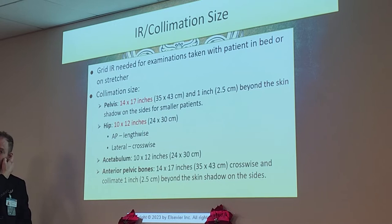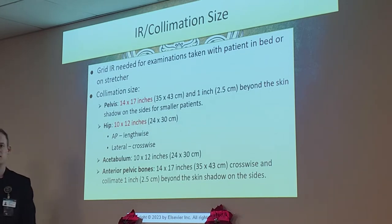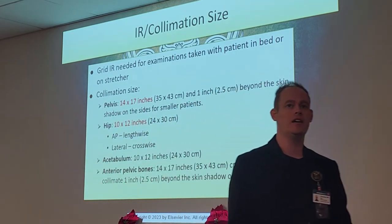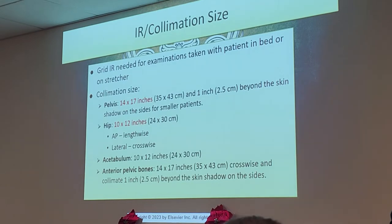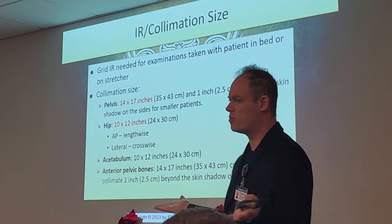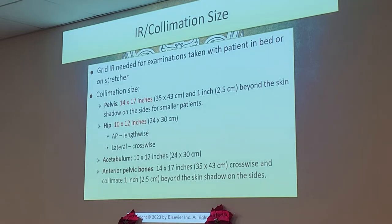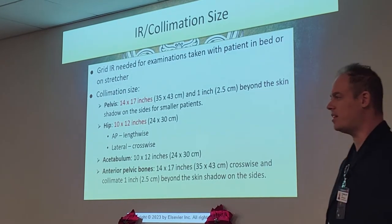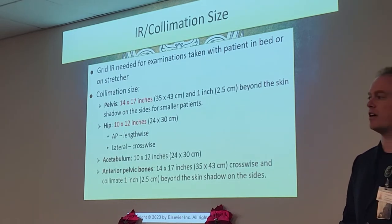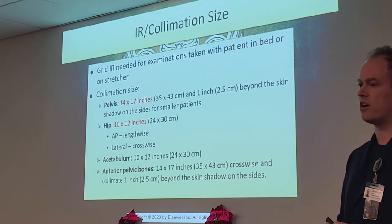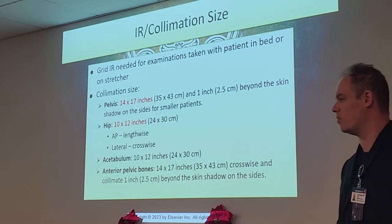For IR collimation size: if dealing with the pelvis, it's always going to be a 14x17 cassette for the average adult patient. You should always do it crosswise because the pelvis is wide — doing it lengthwise will cut off the sides of the hips or pelvis. For the hip, use a 10x12 cassette for both projections, AP and lateral. The AP should be lengthwise; the lateral should be crosswise — those switch between the two. For AP, you're interested in the femoral area lengthwise; for lateral, you need crosswise to capture the femur on the image.